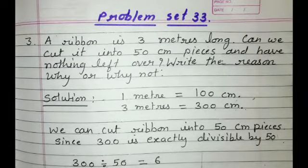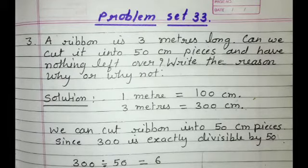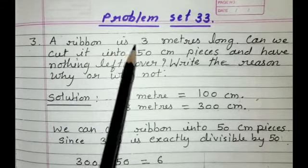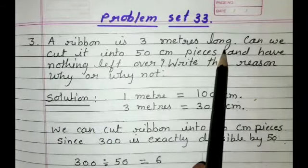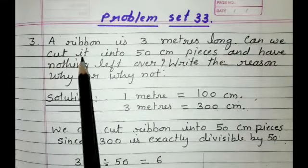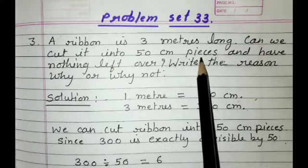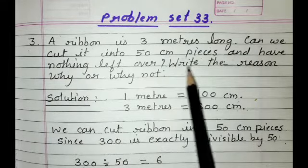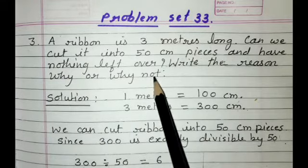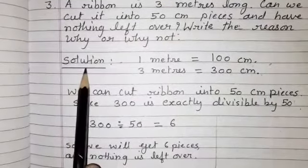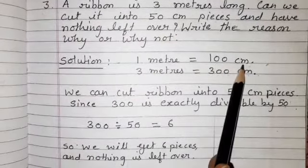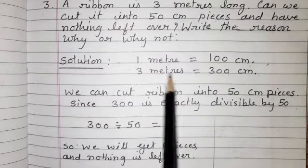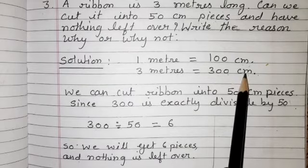Now we will solve other questions of problem set 33. Question number 3: a ribbon is 3 meters long. Can we cut it into 50 centimeter pieces and have nothing left over? Write the reason why or why not. Solution: 1 meter is equal to 100 centimeters and the length of the ribbon is 3 meters, so 3 meters equals 300 centimeters.